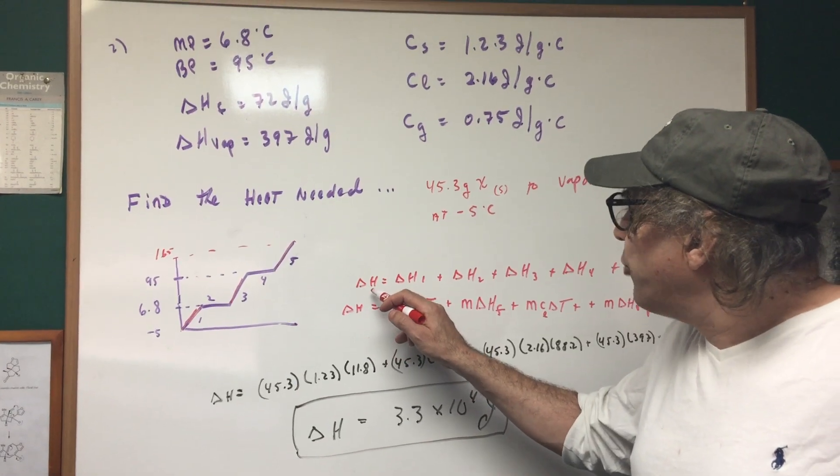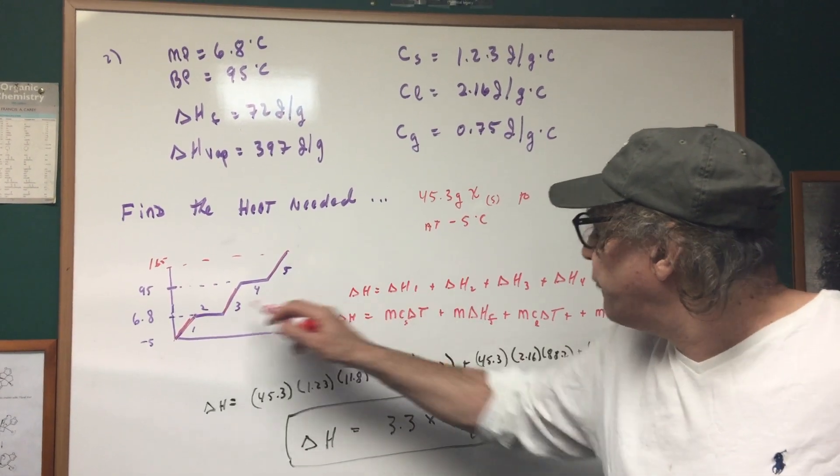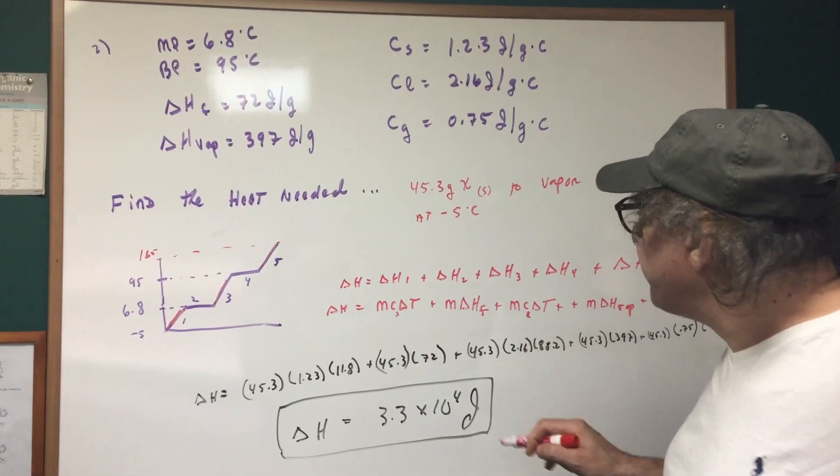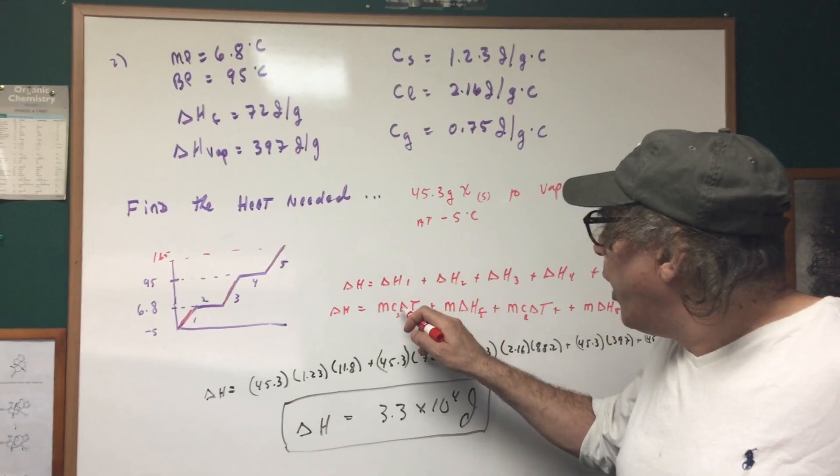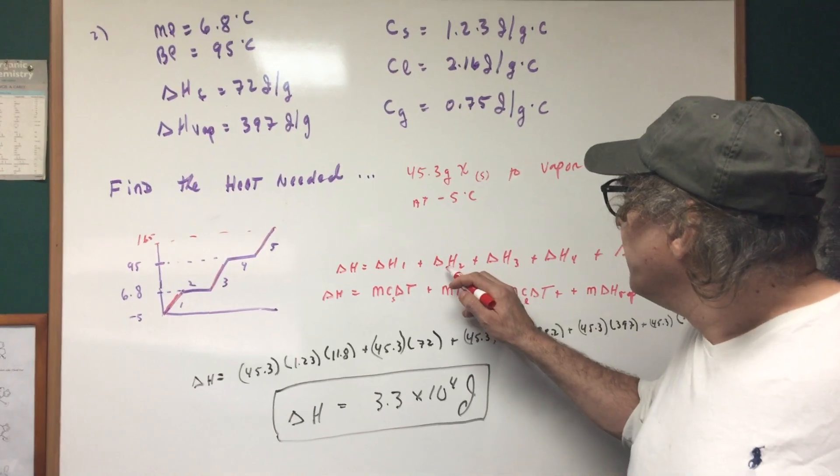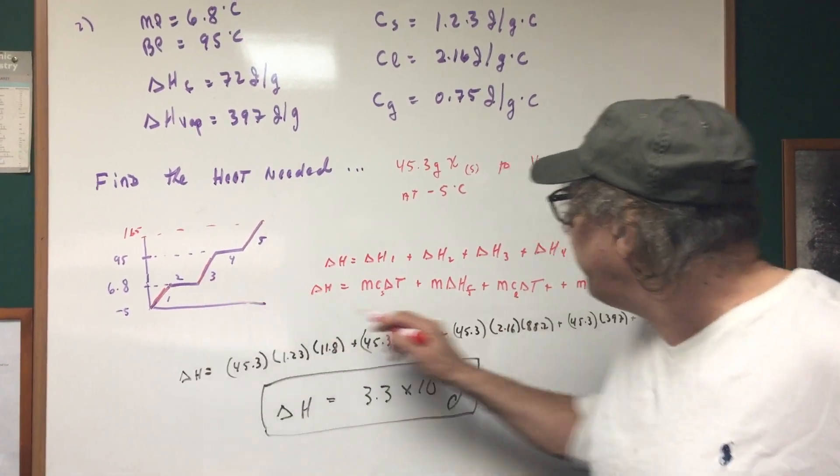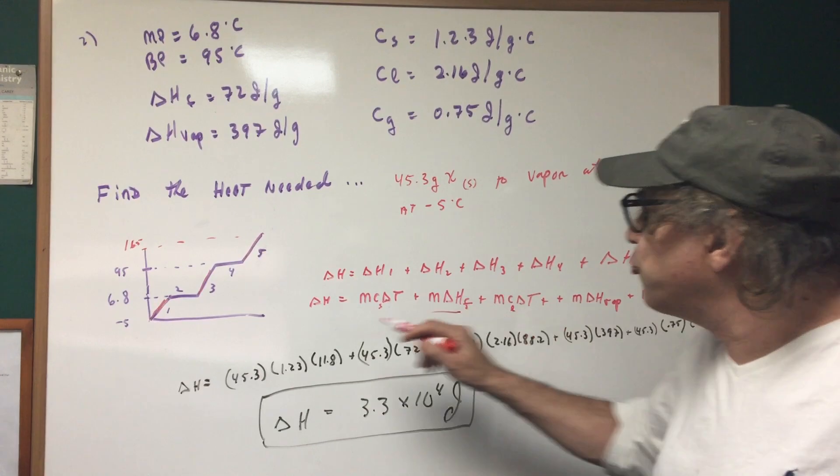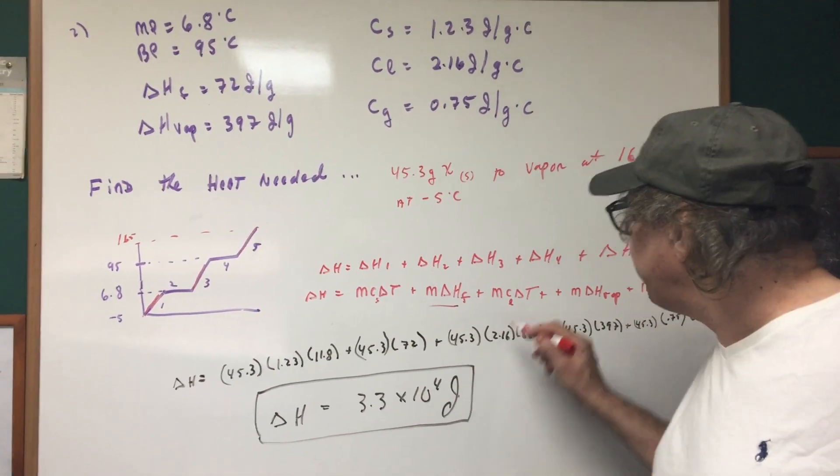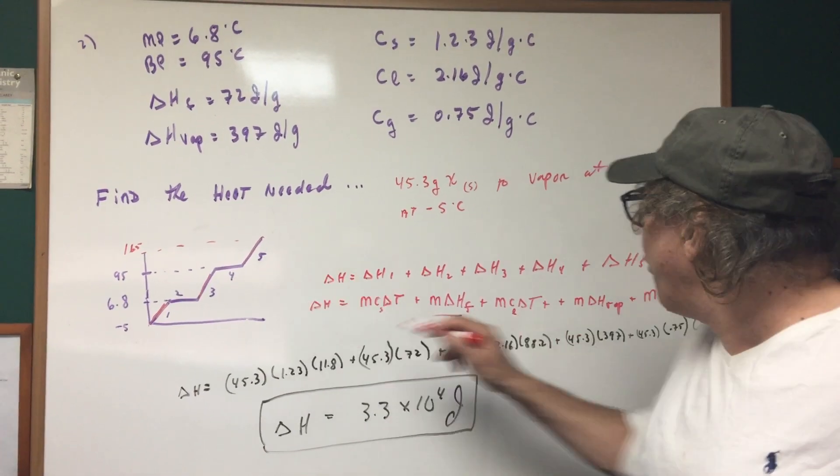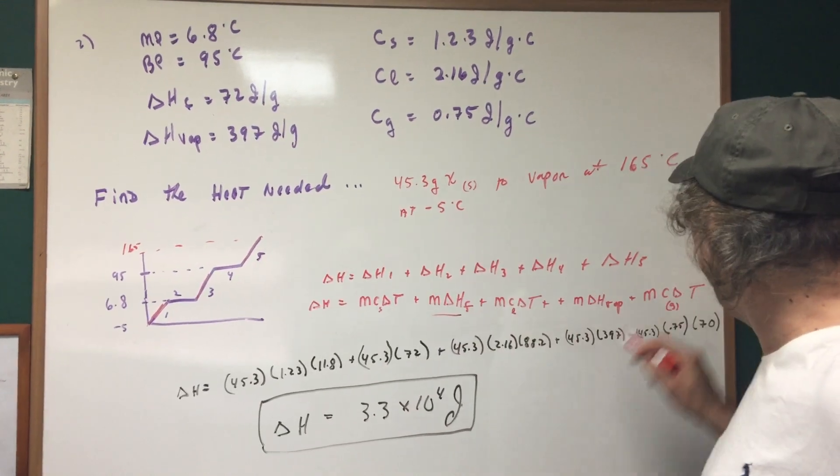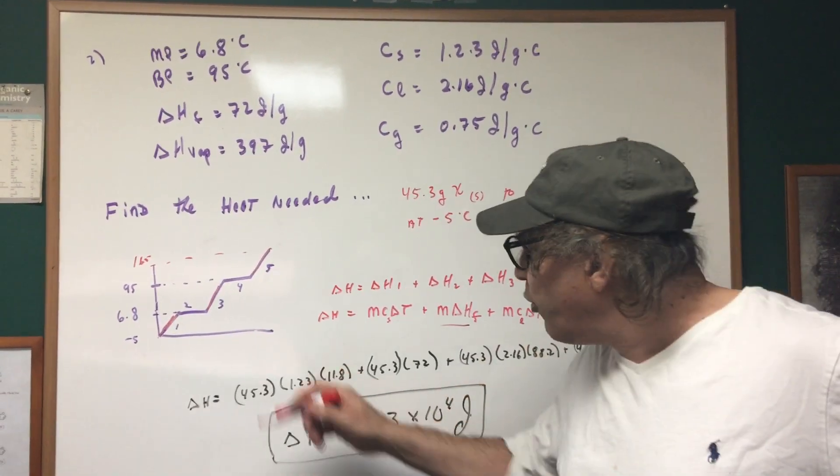So delta H would be the delta H of interval one plus two plus three plus four plus five. The delta H of one would be MC delta T but you're using the specific heat of the solid, then delta H two which would be the mass times the heat of fusion, delta H three which represent this line would be MC delta T where you're using the specific heat of the liquid, then four would be mass heat of fusion, and then finally we're going up MC delta T but you're in the gas phase.